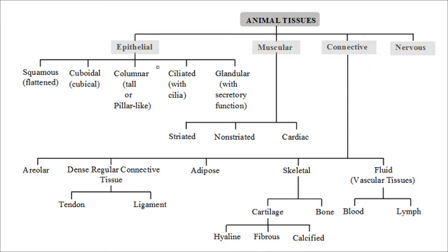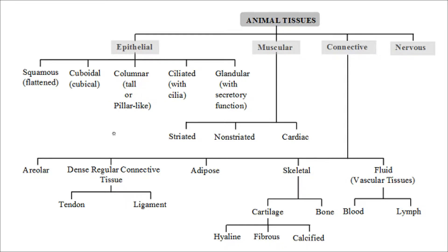Epithelial tissues are classified based on their structure and function as squamous epithelium, cuboidal epithelium, columnar epithelium, ciliated epithelium, and glandular epithelium. Squamous epithelial cells are flattened with a centrally placed nucleus; cuboidal cells are cubical in shape; columnar cells are tall and pillar-like. Ciliated epithelium has cilia on its free end, and glandular epithelial cells function for secretion of enzymes or hormones.